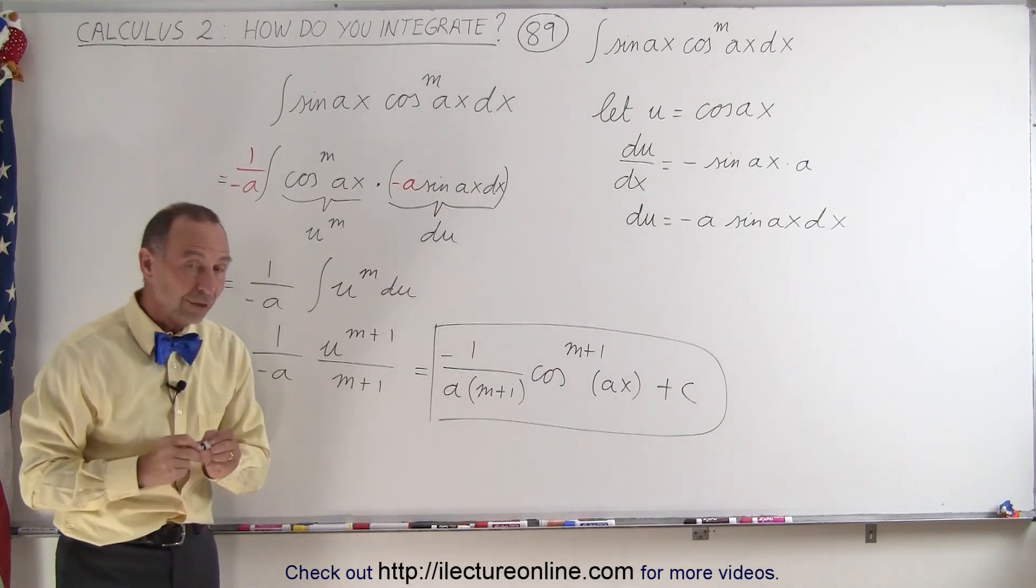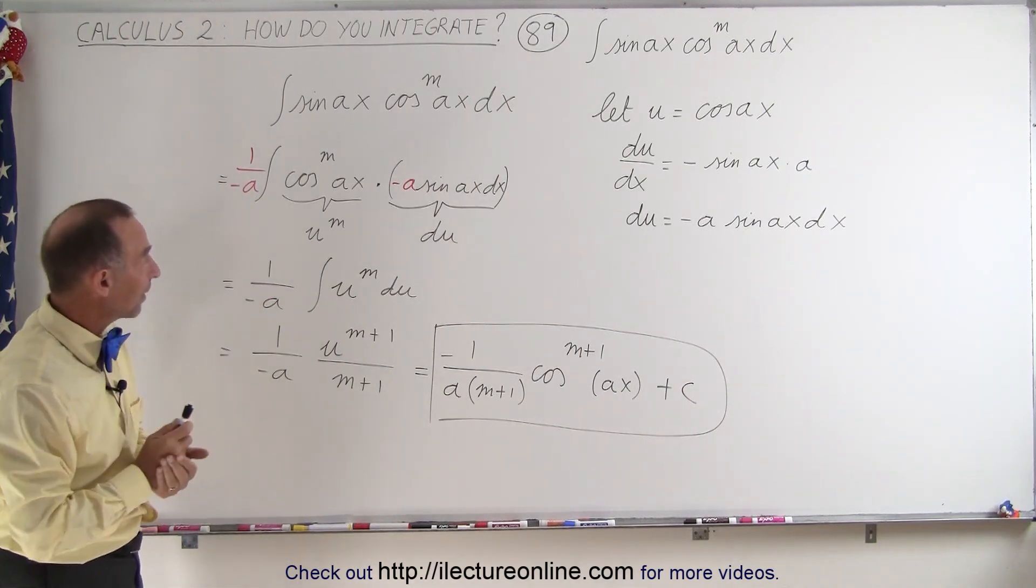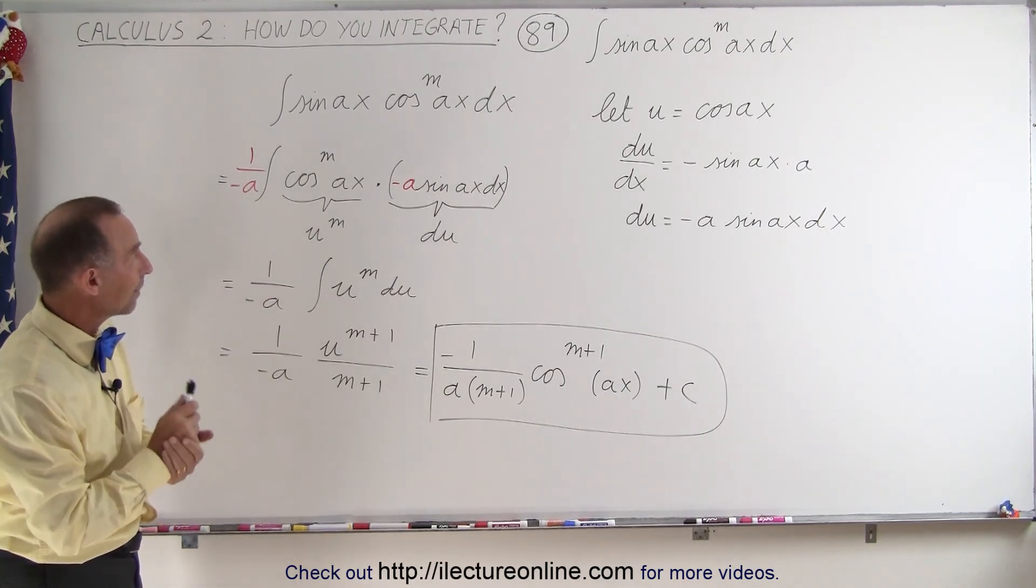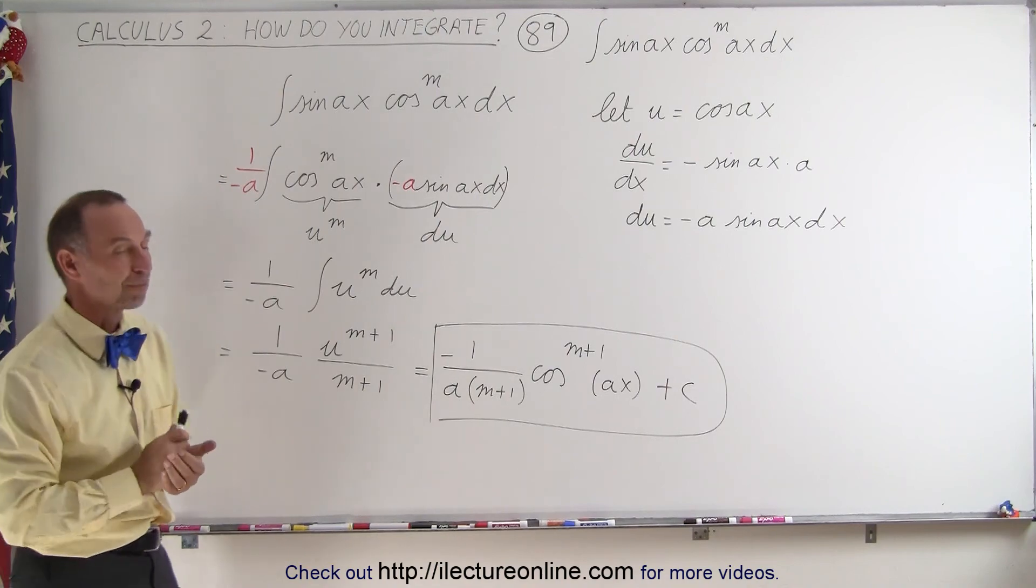And that will then be the result of the integral of the sine of Ax times the cosine to the m power of Ax. And that's how it's done.